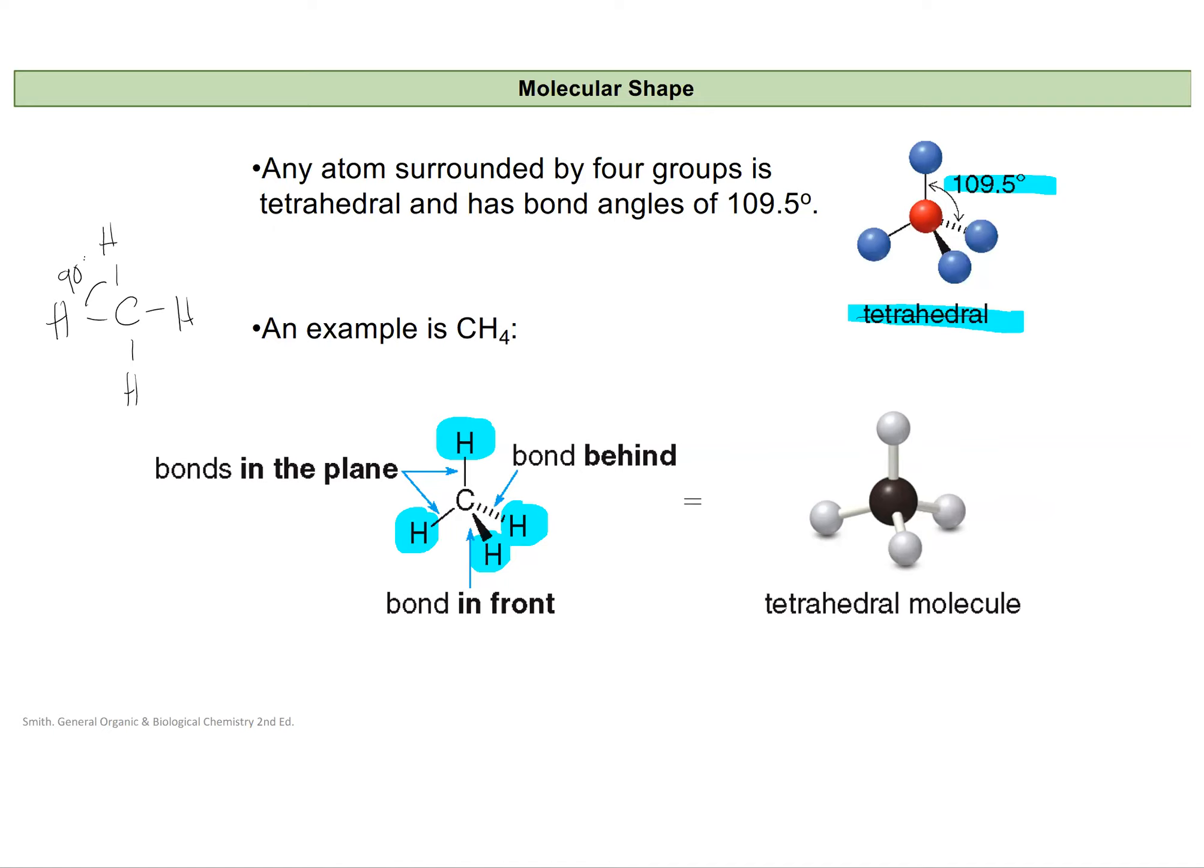So the way that we represent this in three dimensions consistently is with what we call wedges and dashes. So a wedge is a solid thicker line, and it means that the atom is coming out of the plane of the paper, like at you or the board. And a dash line means it's going back. So it's behind the plane that you're looking at. And it helps to build these in three dimensions with a modeling kit to actually be able to see it and hold it and look at it. But that's what we mean by these wedges and dashes here to try to represent this molecule in three dimensions consistently.